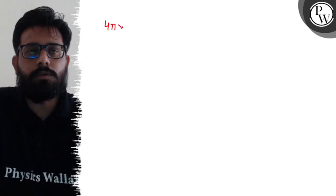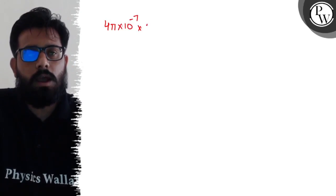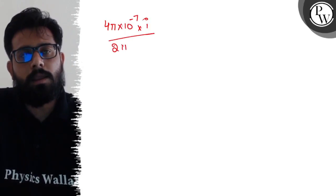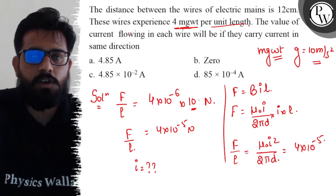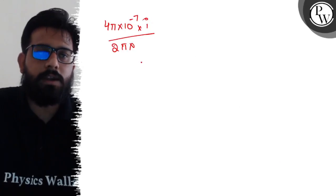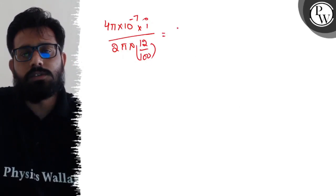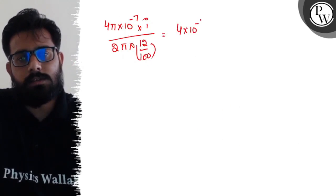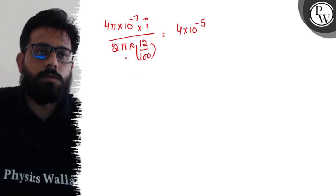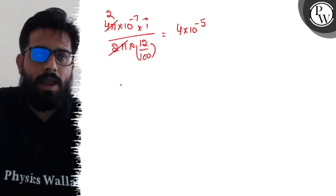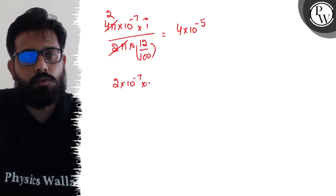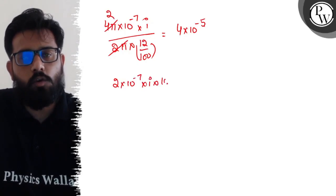Writing μ₀ as 4π × 10^-7 times i² upon 2π, and the separation between the wires is 12 centimeters. Converting to meters, that's 12/100. This equals 4 × 10^-5. Once you solve this, it comes out to 2 × 10^-7 × i² upon 0.12.